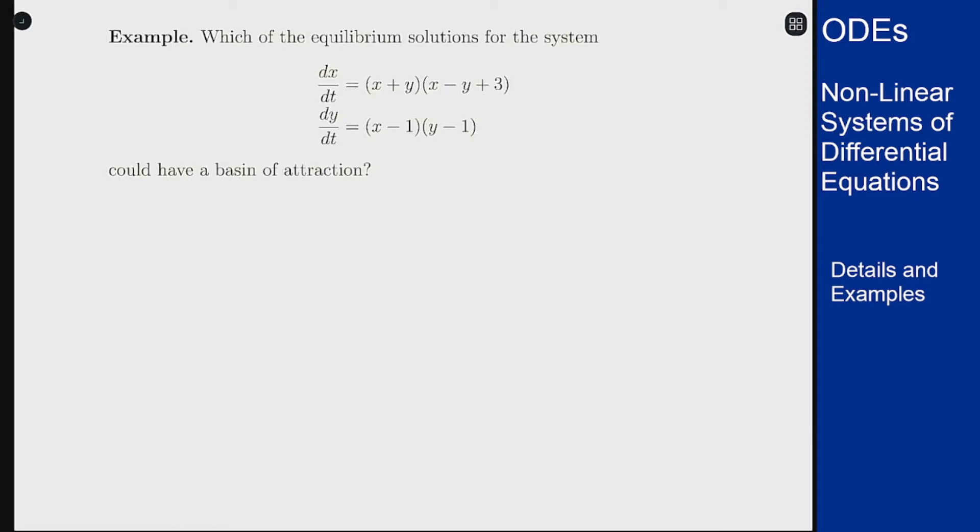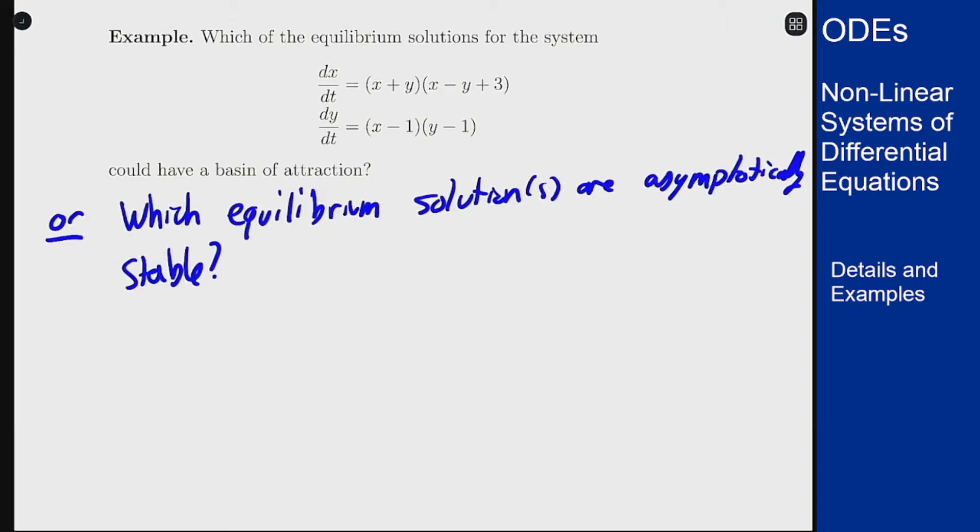In this example, I want to analyze which of the equilibrium solutions for a given system could have a basin of attraction. This question is really asking which of these equilibrium solutions is asymptotically stable. So we need to find the solutions and then determine their stability using linearization to see what's going to happen.